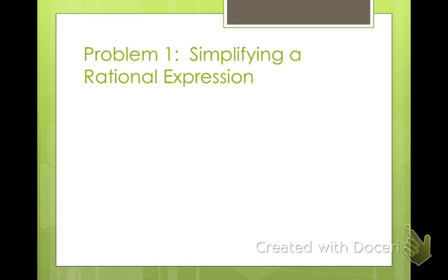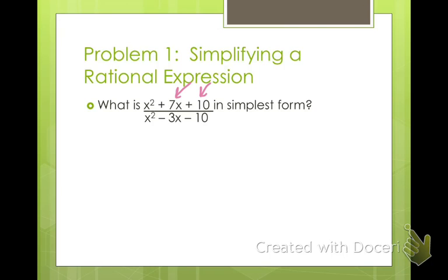Alright, so let's get started with simplifying a rational expression. What is x² + 7x + 10 divided by x² - 3x - 10 in simplest form? In order to simplify this, we're going to have to factor the numerator and the denominator. So I need to ask myself, what are multiples of 10 that add up to be 7? Well, 2 and 5. So my numerator is x + 2, x + 5.